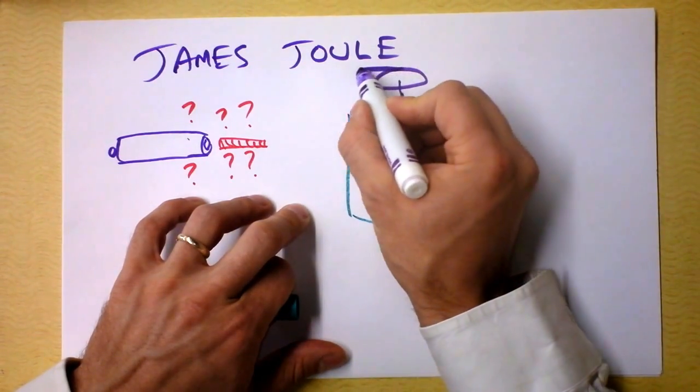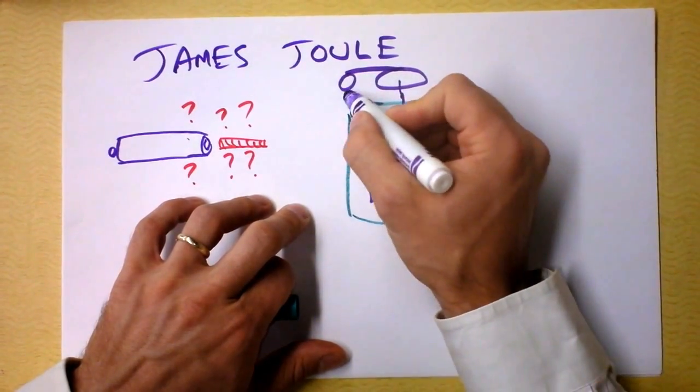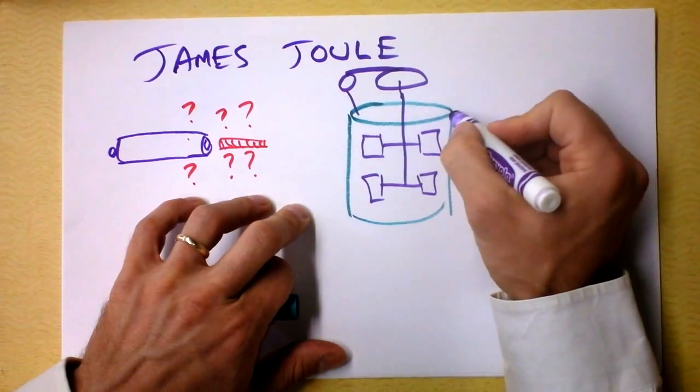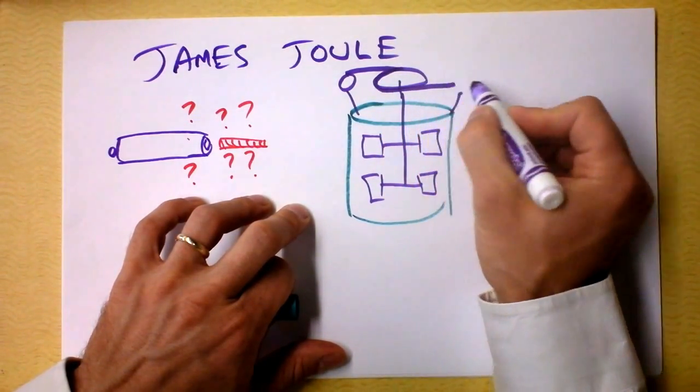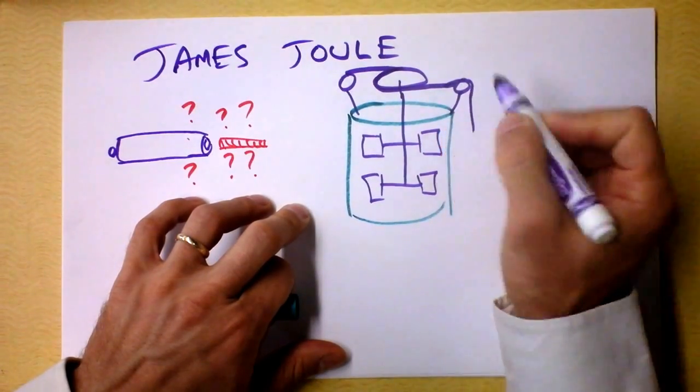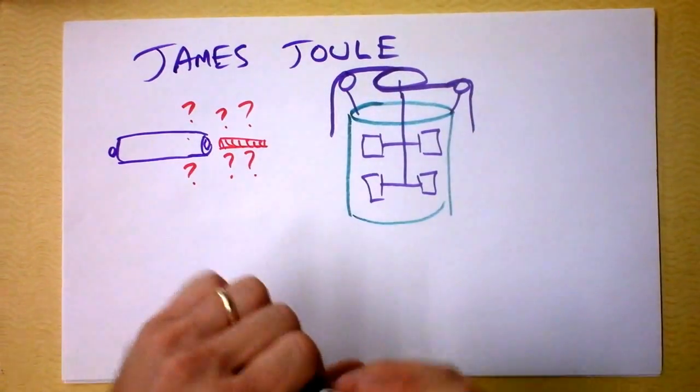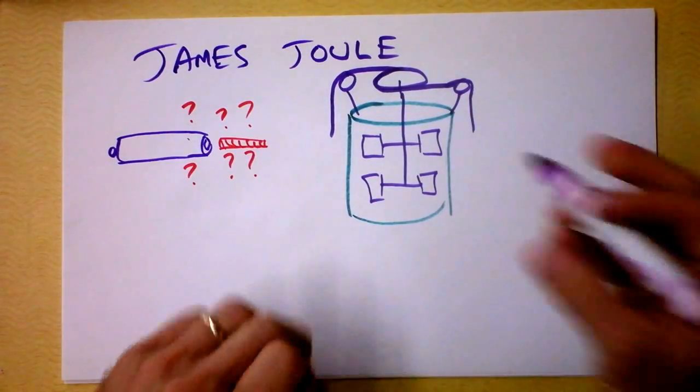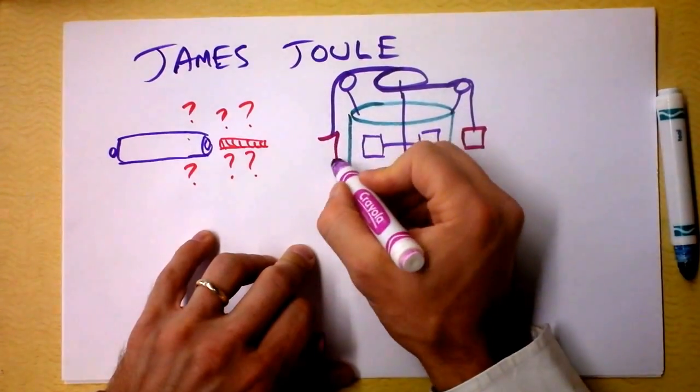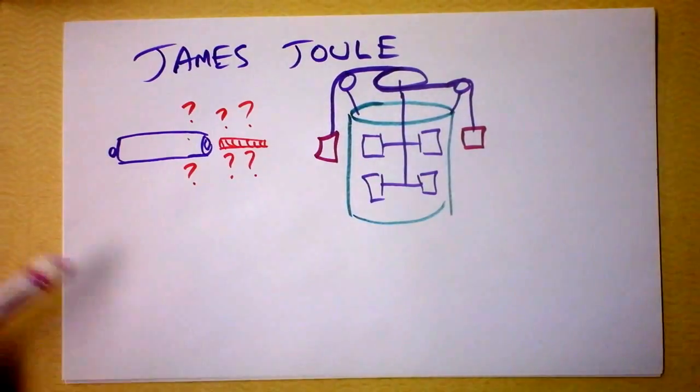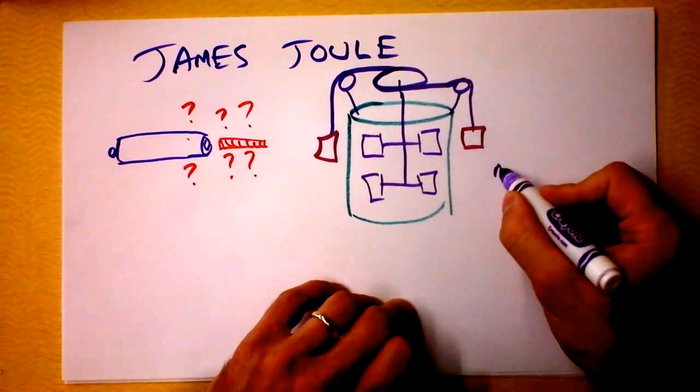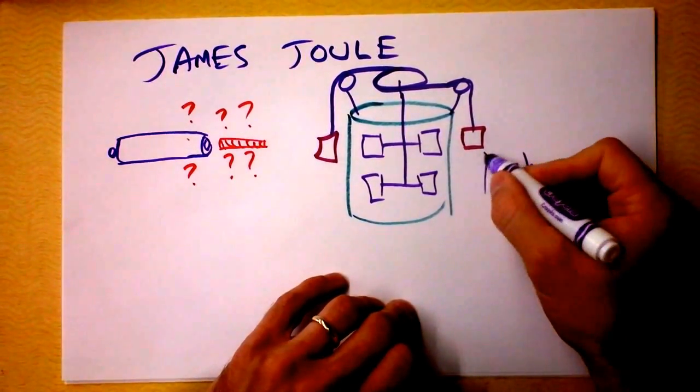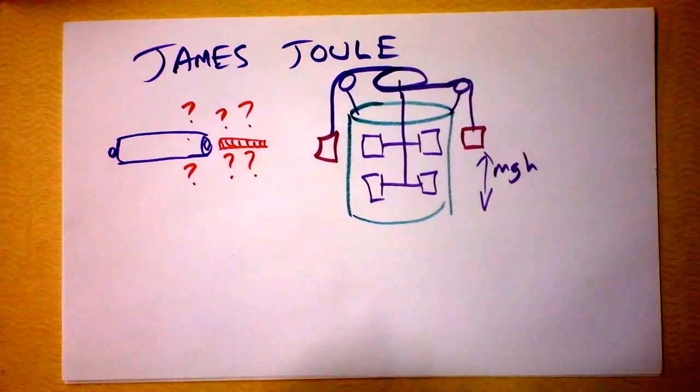Out here he's got a big pulley, and he can put another pulley right here, and then he puts another pulley out here and that one comes down, and then he's got these masses that he dangles here. So he can calculate exactly how much energy he's given to these masses.